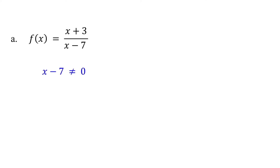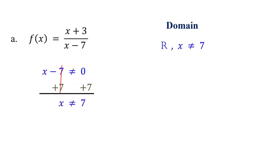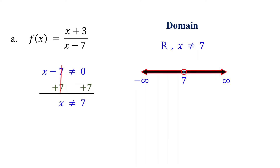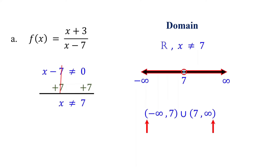For this function to be defined, x minus 7 must not equal zero. Solving this inequality, we find that x cannot equal 7. Therefore, the domain of this rational function is all real numbers except 7. To write the domain in interval notation, first represent it on a number line. Mark an open circle at 7, indicating that 7 is excluded. Then shade the line to the left and right of 7. You can write the domain in interval notation as negative infinity to 7 union 7 to positive infinity. Parentheses around 7 indicate it is excluded; parentheses are also used for negative and positive infinity since they do not represent a specific point on a number line.